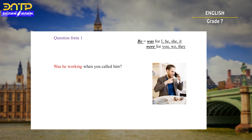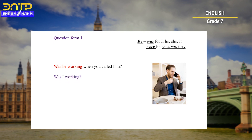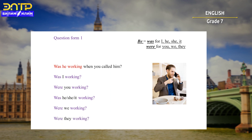Now let's move on to question form number one. For example: 'Was he working when you called him?' We shouldn't forget the question mark at the end. You can change the pronoun for all others: 'Was I working?', 'Were you working?', 'Was he/she/it working?', 'Were we working?', 'Were they working?'